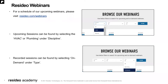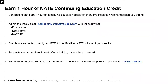For those contractors joining us for today's live session interested in earning one NAIT continuing education credit, there are a few things to know. If you provided your NAIT ID on your registration form, we will submit those details to NAIT and don't need any additional information from you. If you did not provide your NAIT ID, please email your first name, last name, NAIT ID, and the date of the session to homes.university@resideo.com within one week. This information is submitted to NAIT one week following the close of each session, and any requests sent outside of one week cannot be processed.